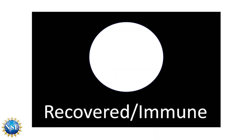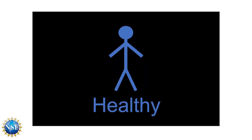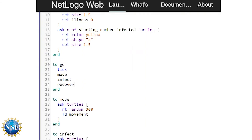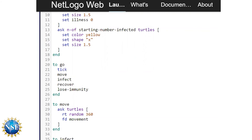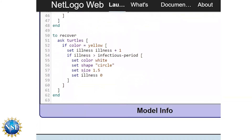After turtles recover, they become white circles. After they lose immunity, they will again turn blue and into the shape of a person, indicating they are once again susceptible to infection. As with all sub procedures, we'll begin by adding lose-immunity in the go procedure at the bottom of the list, then scroll down and set up the lose-immunity sub procedure by writing 'to lose-immunity' and adding 'end' at the end.